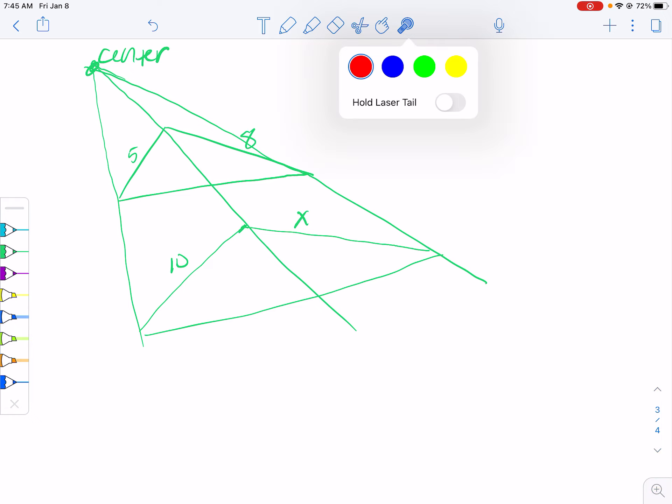So notice that we have that this 5 is corresponding to this side length of 10. So we went from 5 to 10, and then we're going from 8 to something. So we can do equals 8 over something. So you can set up this proportion, so you could solve this proportion.